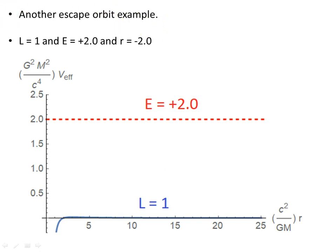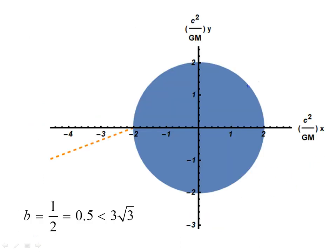Another escape orbit example. L is 1, E is plus 2, and starting at R equals minus 2 now, right closer, right over the Schwarzschild radius. E is plus 2, L is 1, and for that, we get, starting at 2 now, and it escapes off to infinity here. The ratio b is 1 over 2, 0.5 is less than 3√3, and that satisfies the condition for an escape orbit.